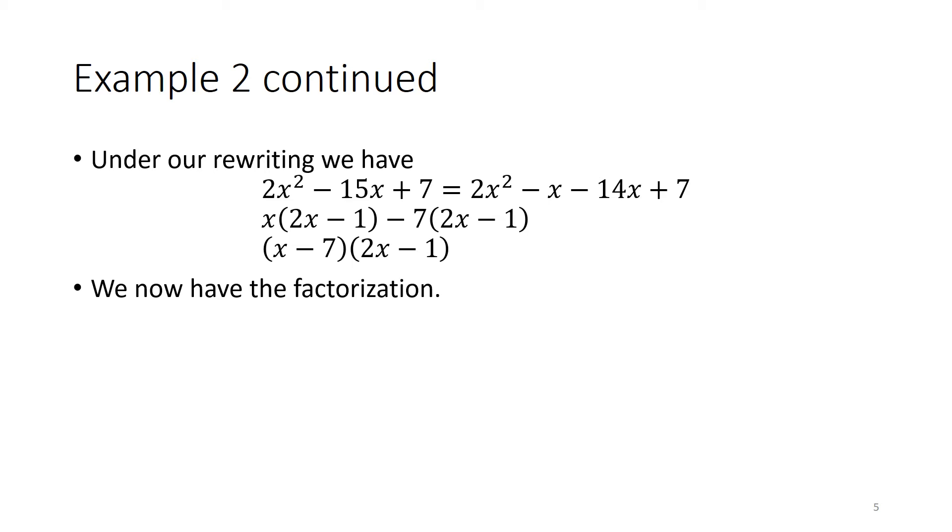From the last two, we may factor out a negative 7, which also leaves us with a 2x minus 1 as an additional factor. Since both of these share the quantity 2x minus 1 as a factor, we may also factor that out, leaving us with the quantity x minus 7 times the quantity 2x minus 1, and we now have the factorization.